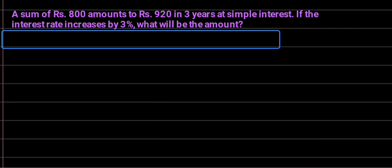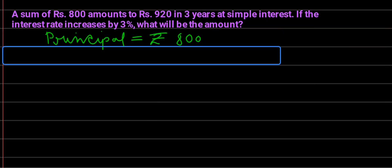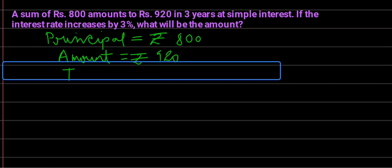This question is about simple interest. A sum of rupees 800 amounts to rupees 920 in three years at simple interest. So the principal amount is 800 rupees, the total amount is 920 rupees, and the time period is three years. Now, if the interest rate increases by three percent, what will be the amount?